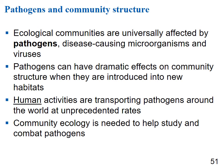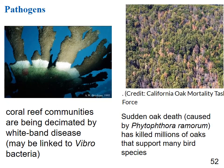Ecological communities are universally affected by pathogens — disease-causing microorganisms and viruses — which can dramatically affect community structure when introduced into new habitats. Human activities are transporting pathogens around the world at unprecedented rates. Notable examples: coral reef communities are being decimated by white band disease, possibly linked to Vibrio bacterium, and sudden oak death is killing oak trees — when oak trees die, the organisms that depend on them lose their habitat too.